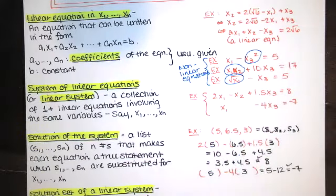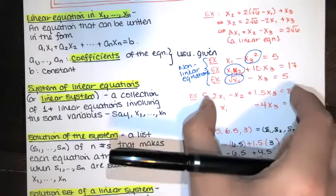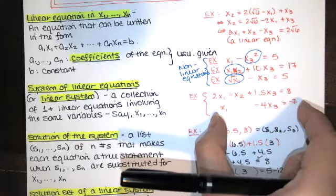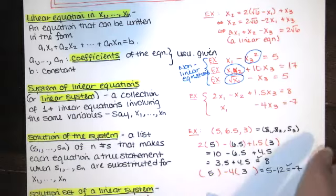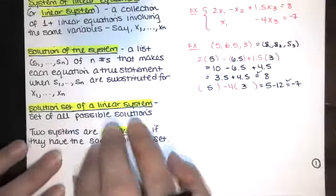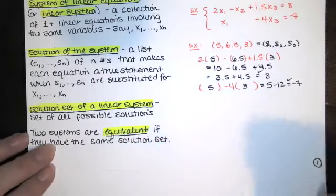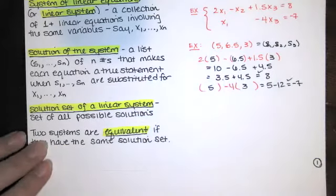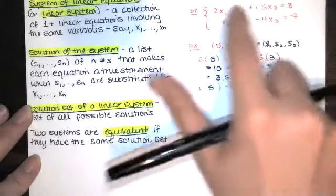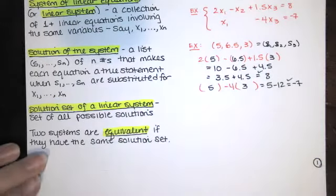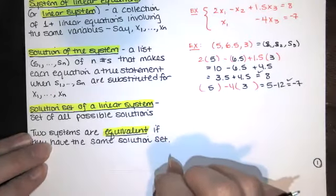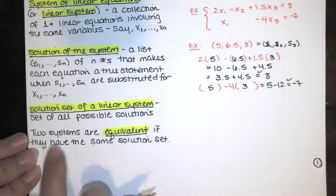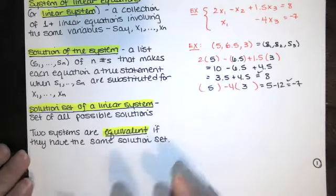That's just one solution — it turns out there are infinitely many solutions to this system. This represents a plane in three-dimensional space, and the second equation represents a different plane. Those planes intersect along a line in 3D space, so that's one of infinitely many points on that line. The solution set of a linear system is the set of all possible solutions, which might be a single point, empty (no solutions), or infinitely many.